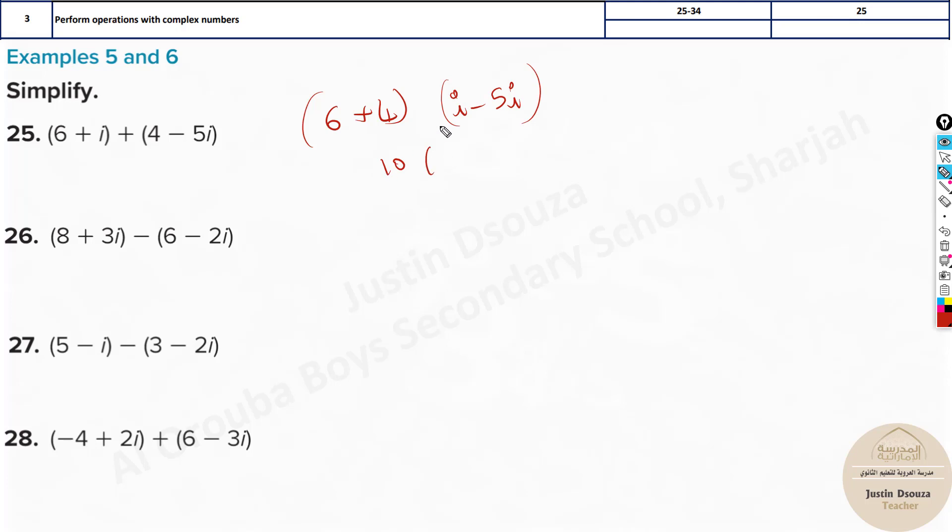It would be 10 - sorry I forgot to write the plus sign here. This is very important. See it's 6 plus 4 plus i minus 5i. So it's 10 plus - it will be minus now - because 1 minus 5 is minus 4, so it's minus 4i. So this would be the answer.